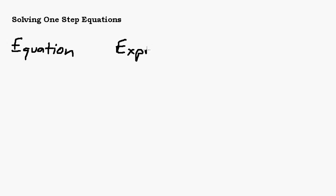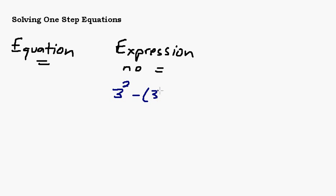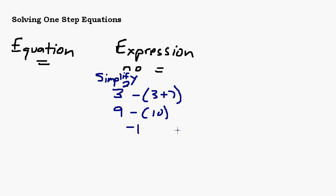An equation is going to have an equal sign somewhere in the problem. An expression is not going to have an equal sign. An example of an expression where you might use the order of operations: 3 squared minus the quantity 2 or 3 plus 7. You would use the order of operations to simplify the expression — in this case we get 9 minus 10, which is negative 1. Expressions you simplify; equations you solve.